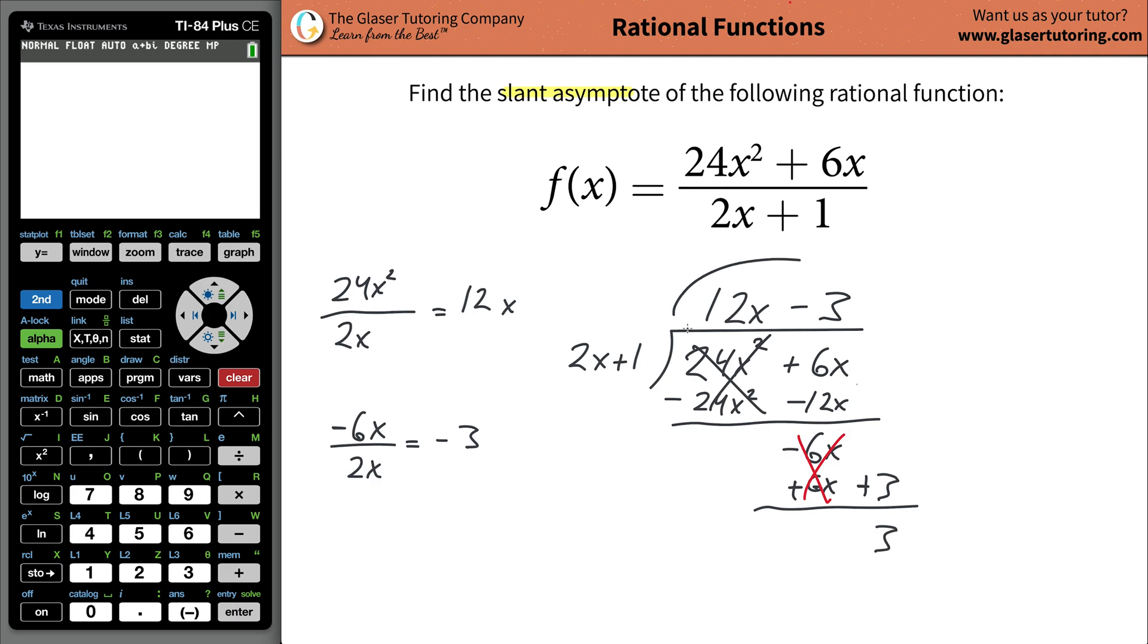So if you had to finish out this function up here, the quotient, you would then write plus your remainder of 3, divided then by the 2x plus 1. Now, it turns out that when we're finding the slant asymptote, I don't care about the remainder. It doesn't matter. What I'm focusing on is the term that is not the remainder, or the meat of this division, the 12x minus 3. And guess what? This is the slant asymptote. And that's it. That's all there is.